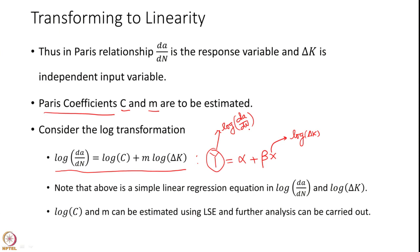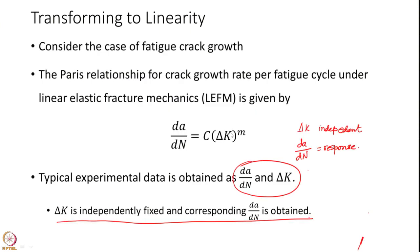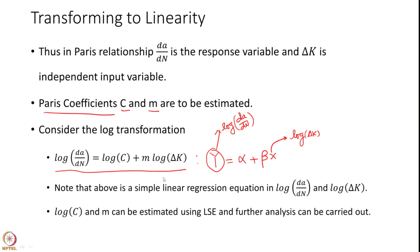What we are showing here is that the Paris relationship can be transformed into a linear relationship through log transformation, and once having done that you can follow the regression model in which log C and M can be estimated through least squares using a simple linear regression model, since there is only one predictor variable.